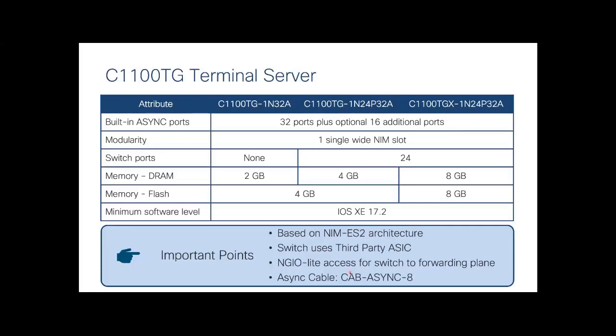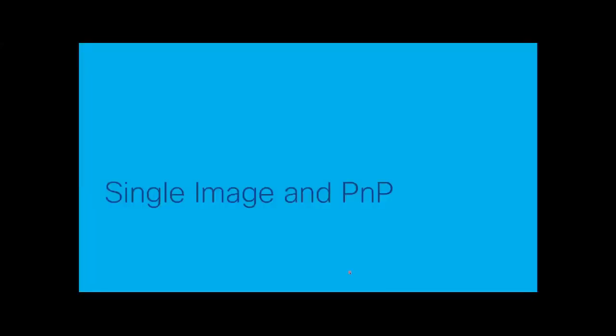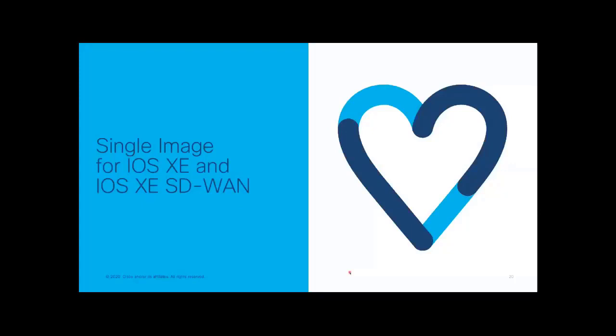Now let's get into the main topic: single image. You might wonder — is single image a new OS name like IOS, IOS XE, or IOS XR? No. Today the enterprise routing portfolio uses the universal K9 image for IOS XE use cases and the UCM K9 image for SD-WAN use cases.